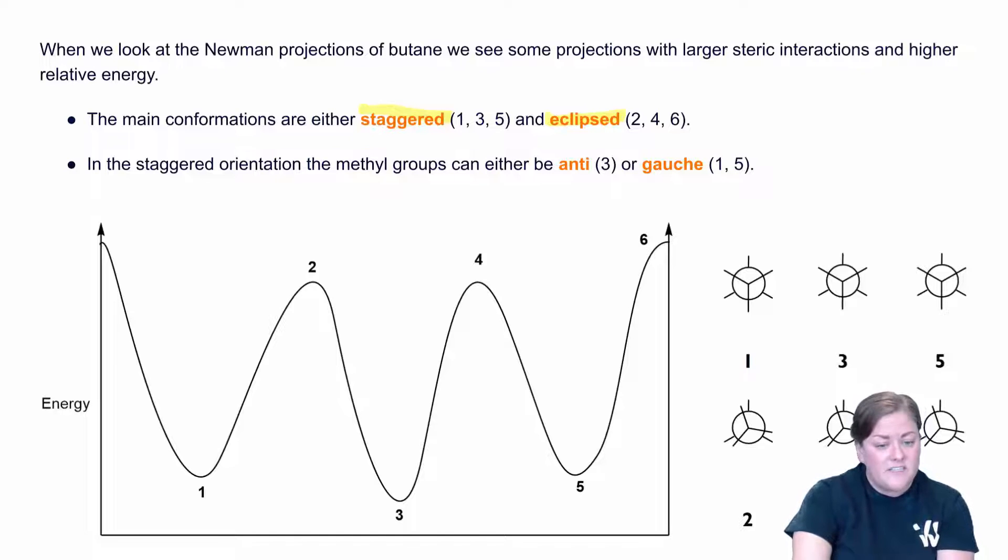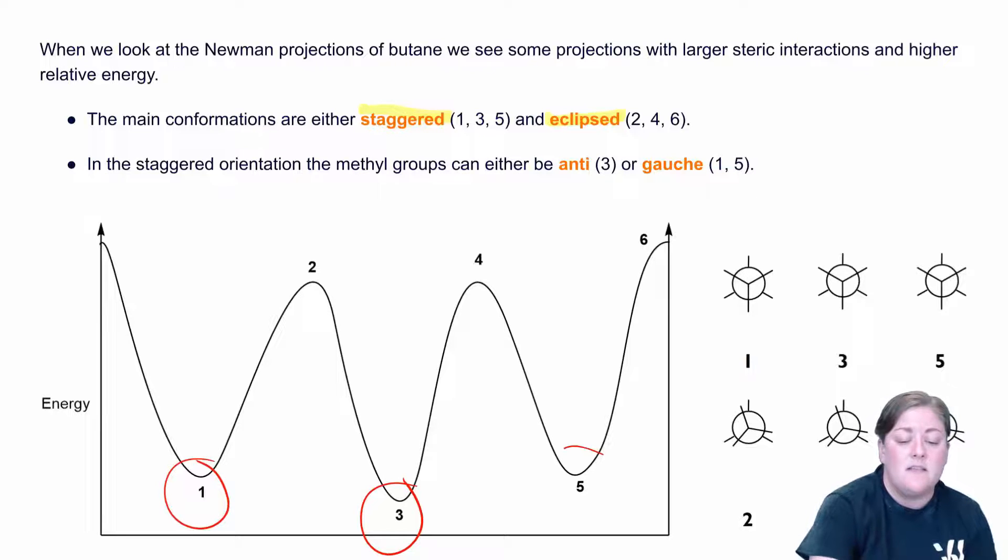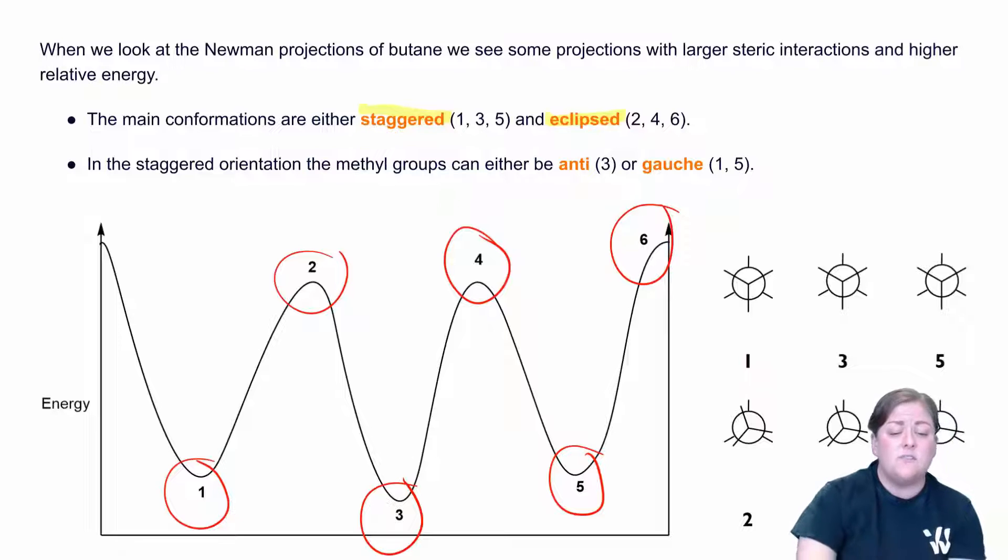Now what you need to know is you need to know that the staggered conformation is lower energy. So here you'll notice they're down here in these wells. And you'll notice that 2, 4, and 6 are maxima. They're higher energy.